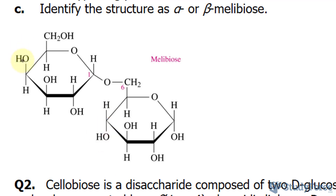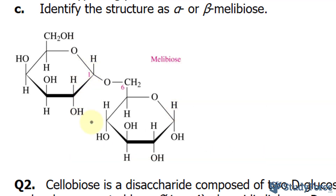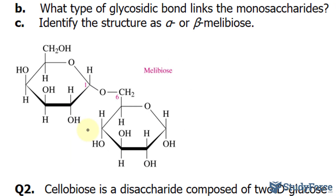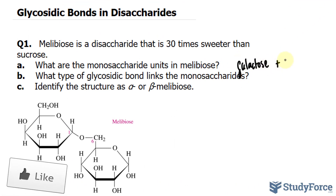In fact, if the OH is at the top, it's galactose — in our case here — and this monomer is glucose. That's the only thing that differs between the two, and it's this small change in orientation that gives rise to their different properties, surprisingly. So for question A, we have galactose plus glucose.